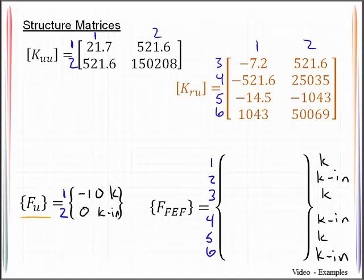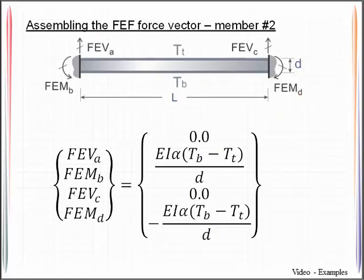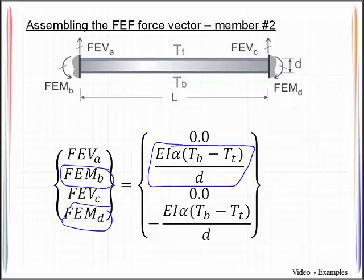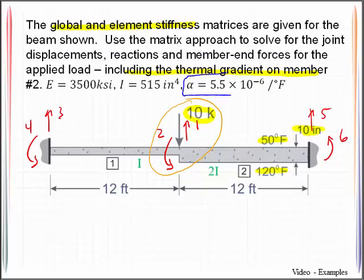However, we also need to impose the forces that are being generated due to that thermal gradient. And the way we would do that is to come up with an equivalent set of forces that that thermal gradient generates. And the way that is done is by locking the degrees of freedom associated with that member, and then calculating the fixed-end shears and the fixed-end moments that are associated with that. We have been told before that the only thing that really develops because of that thermal gradient will be these fixed-end moments at the degrees of freedom. And they are based on the temperature at the bottom of the member, temperature at the top of the member, the depth of the member, and also the coefficient of thermal expansion, which was given to us earlier in the problem statement along with the properties of E and I.